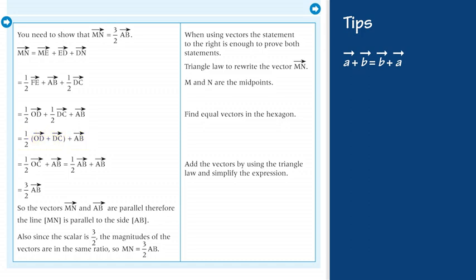Use the triangle law for the vectors in the brackets and use that the direction vector OC is equal to the direction vector AB. Equals half the vector OC plus the vector AB equals half the vector AB plus the vector AB.